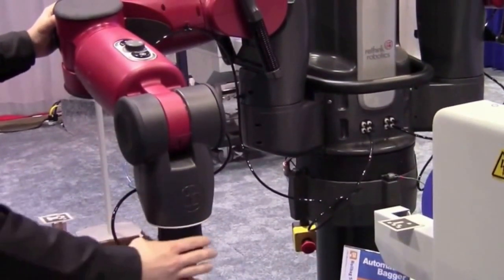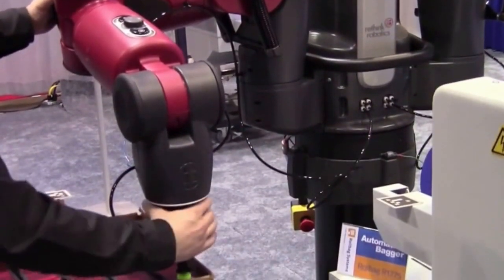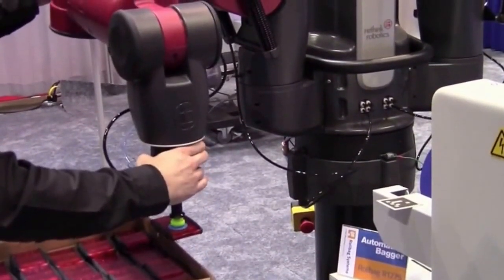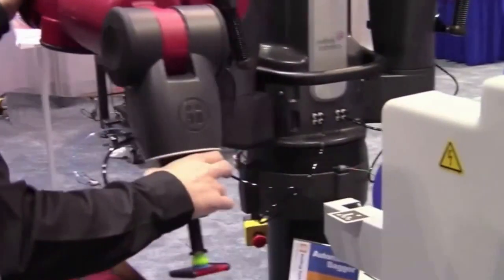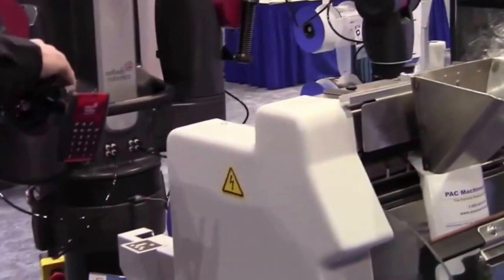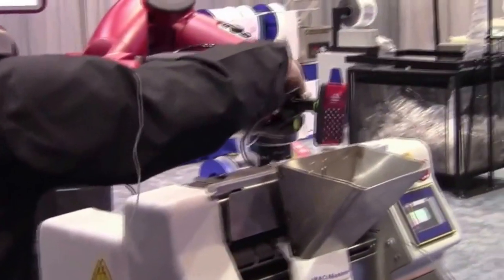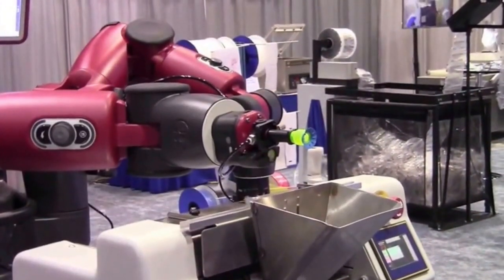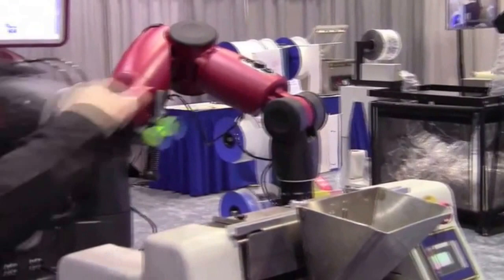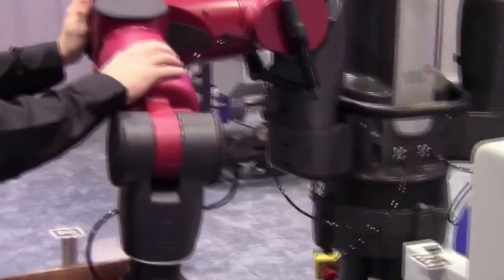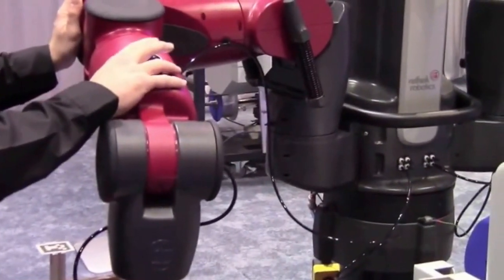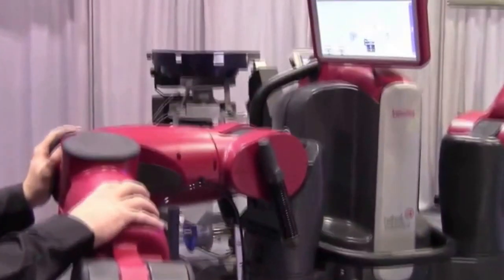I just take Baxter's arm and put it down onto the part, grab the part, and show Baxter how to do this movement and place the object into the bagger. Then essentially all I have to do is go in and hit run, and Baxter is doing this job in no time.